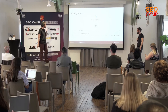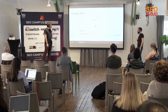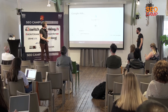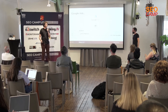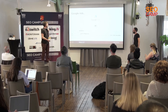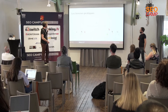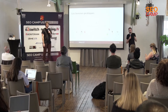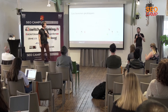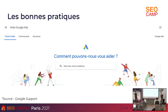Deux principes à garder en tête : qu'est-ce qu'on est prêt à dépenser, et le but d'une vente aux enchères n'est-il pas que le produit soit le plus cher possible ? Google met en place des bonnes pratiques, des conseils, et on va les parcourir ensemble pour voir qu'il faut observer et analyser ce qu'ils donnent comme conseils.